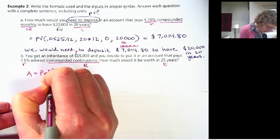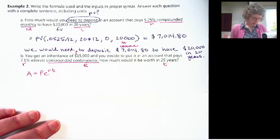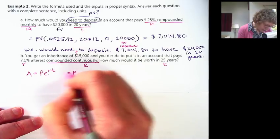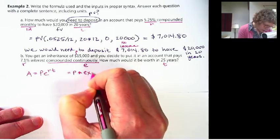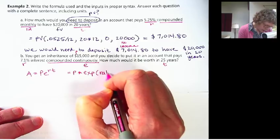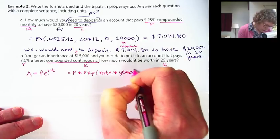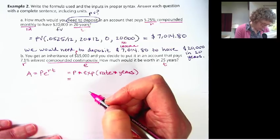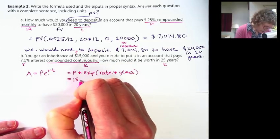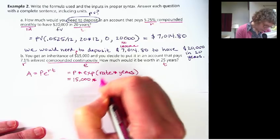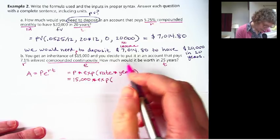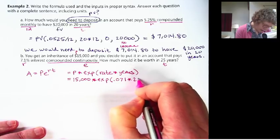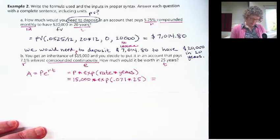Okay. So let me write down the formula for that. A equals PE to the RT. Now we could do it this way with a calculator or we could do it with the spreadsheet. I'm going to do the spreadsheet. But it helps me to remember that. Exponential of rate times years. Or you could just do RT right there. Okay. So I'm going to write it down then we'll put it in the spreadsheet. So we're going to put in 15,000 right now times exp 0.071 times 25.